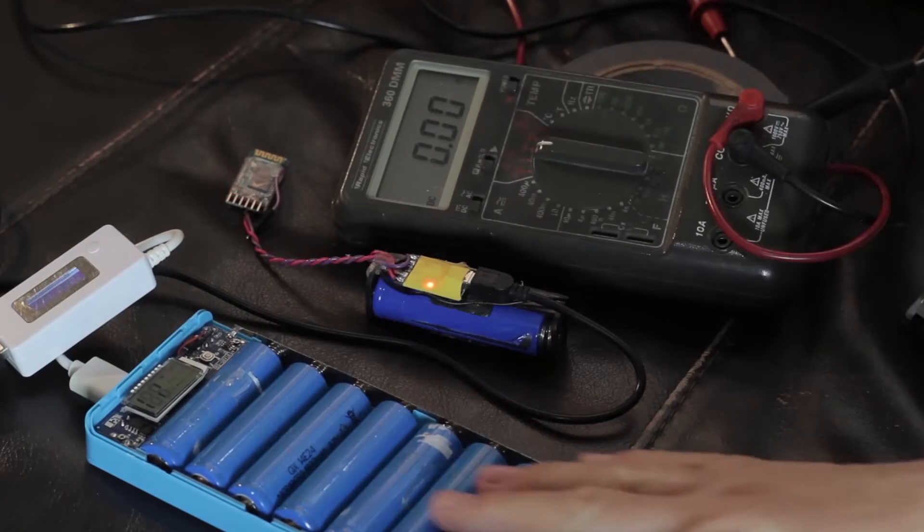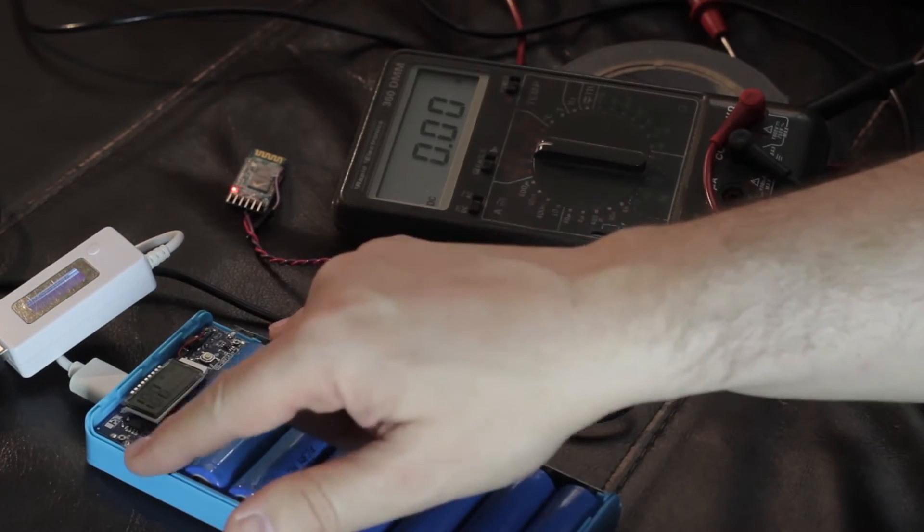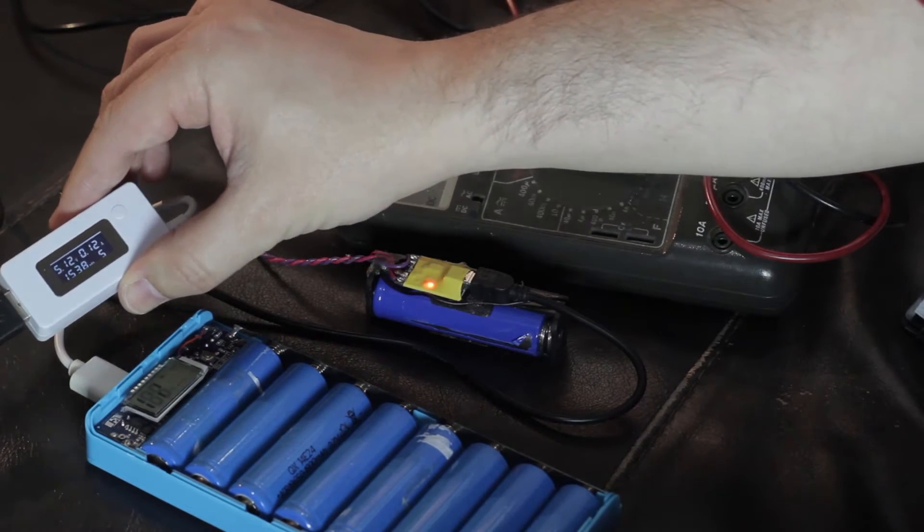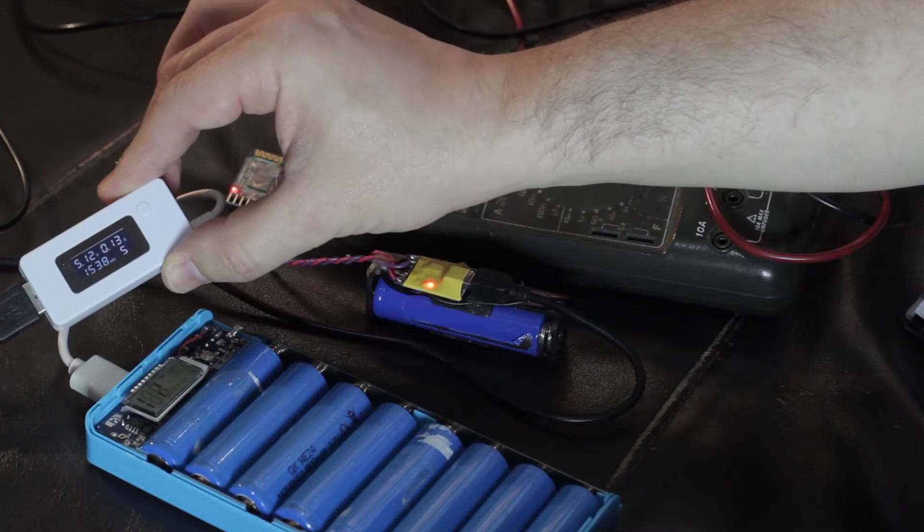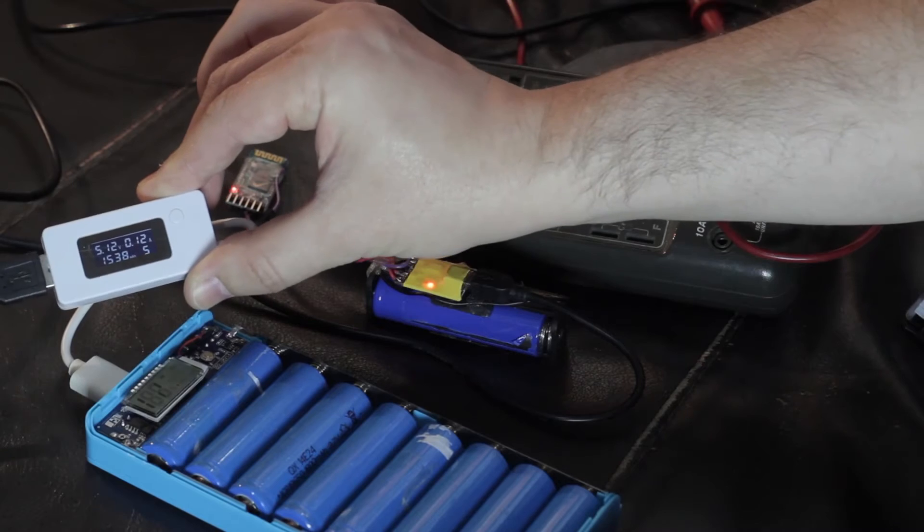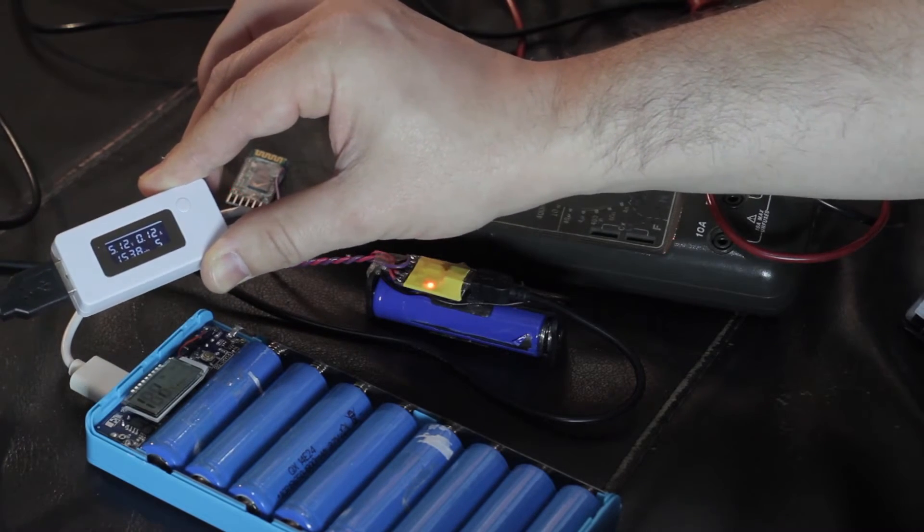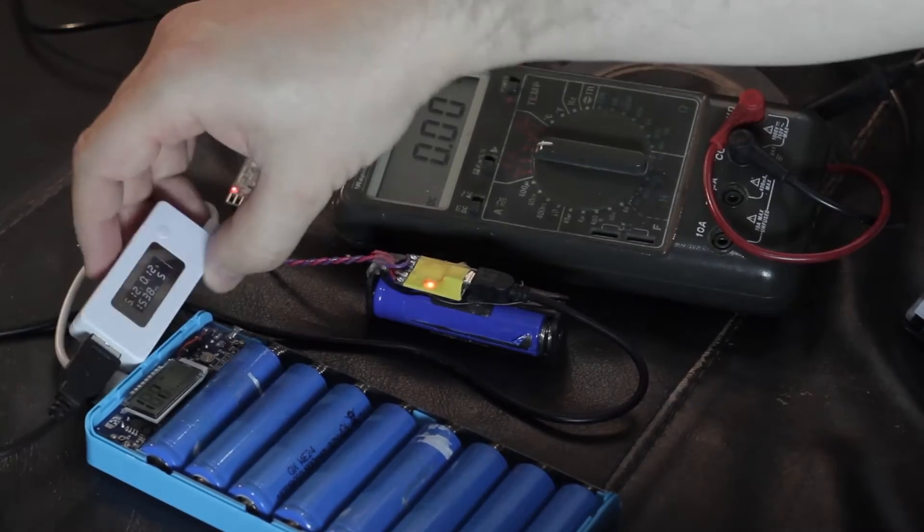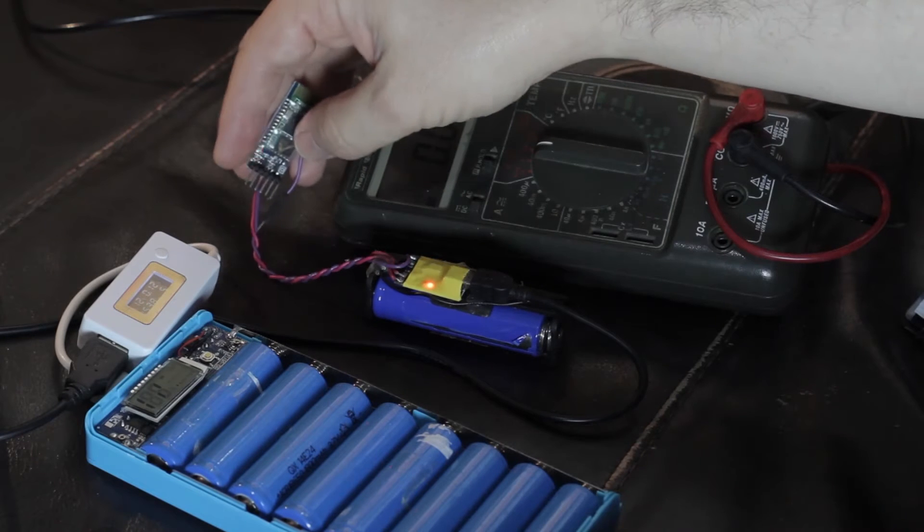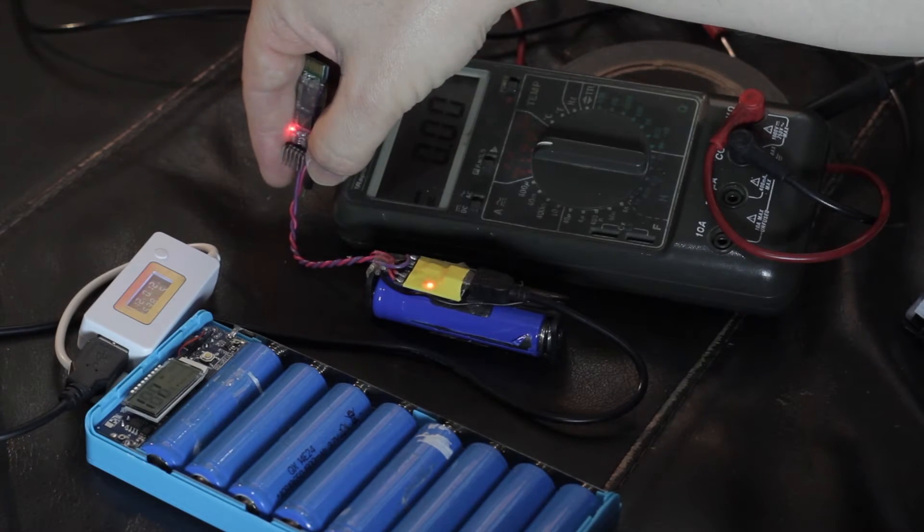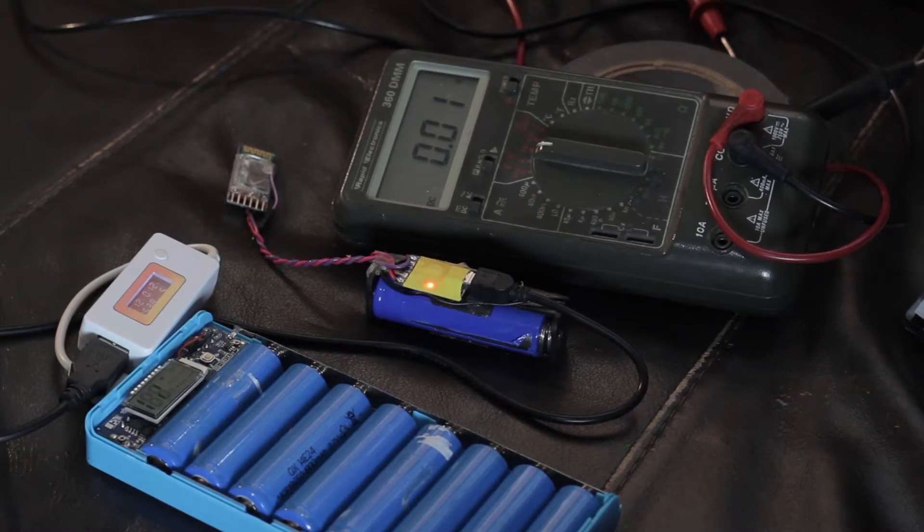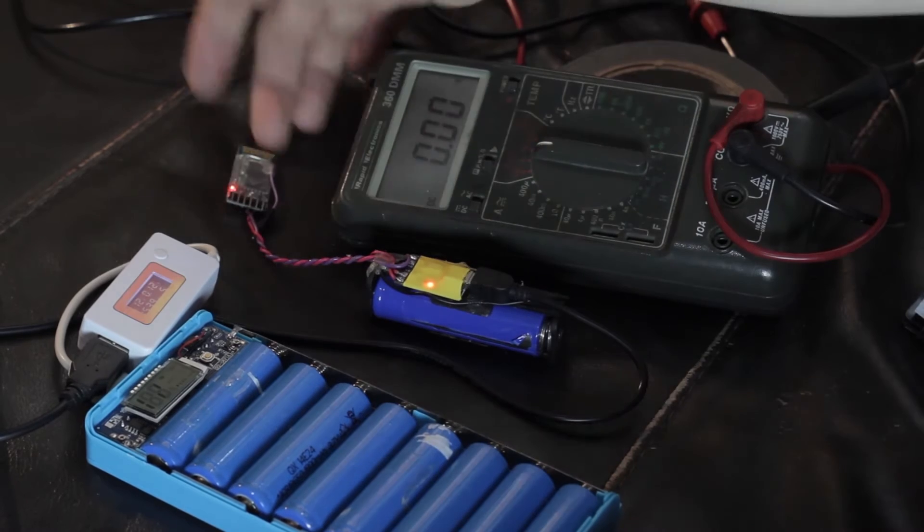So this power bank has been taking 3.7 volts up to 5 volts. It's currently delivering 130-ish milliamps. It has delivered 1,338 milliamps, so 1.5 amps has been delivered through the black cable into this battery. It's also powering this little Bluetooth module, but since these consume only about 5 milliamps at best, I'm not really too worried about the leakage through here.